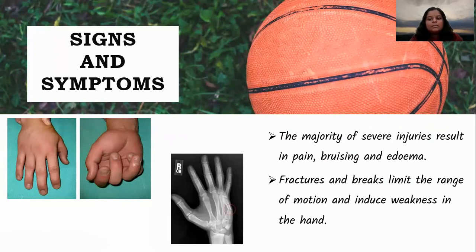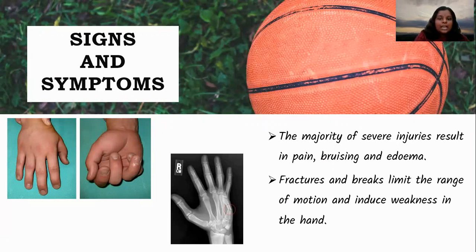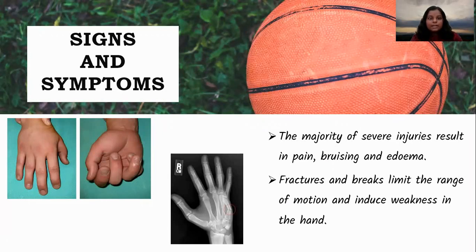Fractures and breaks limit the range of motion and induce weakness in the hand. Whereas lacerations are marked by bleeding, which can result in weakness, blistering, blackened tissue, discoloration, skin abnormalities, and deformities.